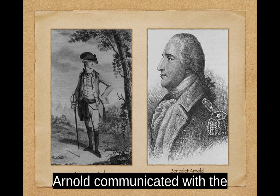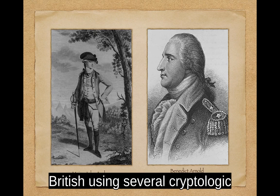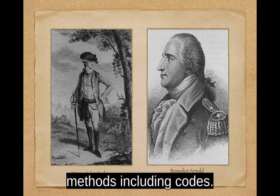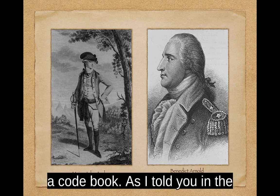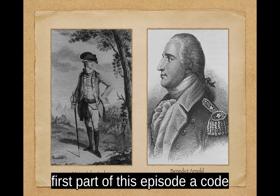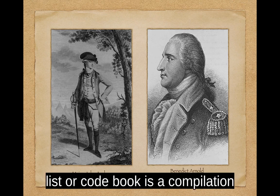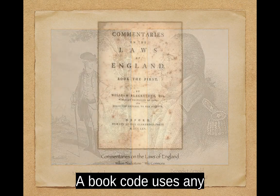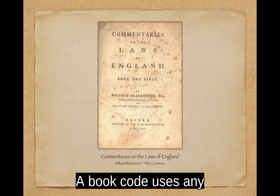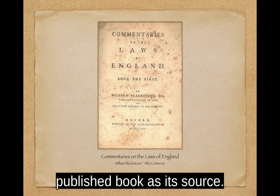Arnold communicated with the British using several cryptologic methods, including codes. One of his methods was the use of a book code, which is different from a code book. As I told you in the first part of this episode, a code list or code book is a compilation of words and their associated code. A book code uses any published book as its source.